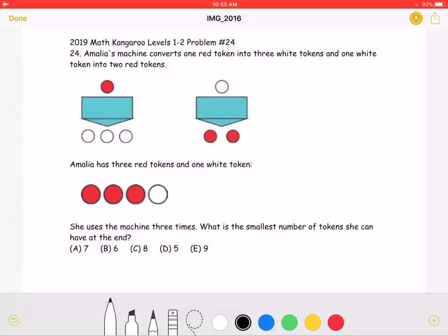What is the smallest number of tokens she can have at the end? A, 7, B, 6, C, 8, D, 5, or E, 9.